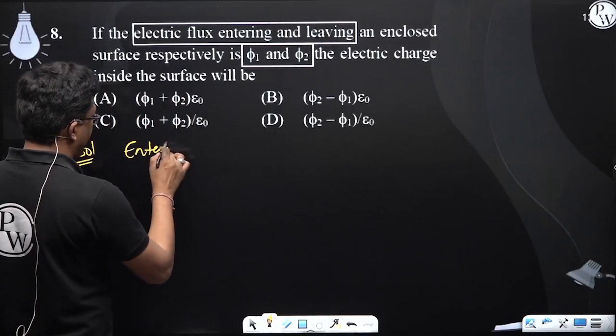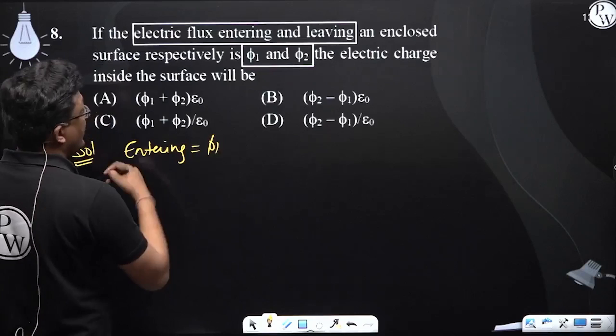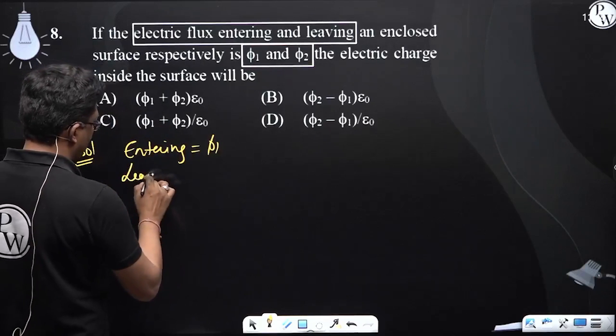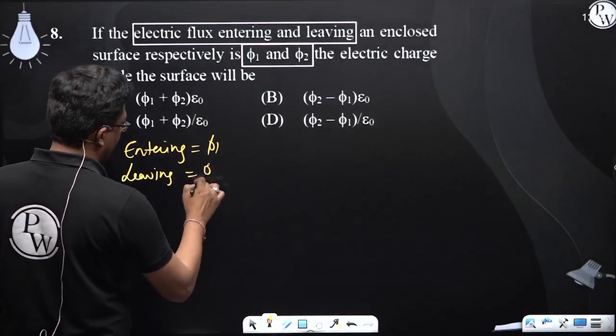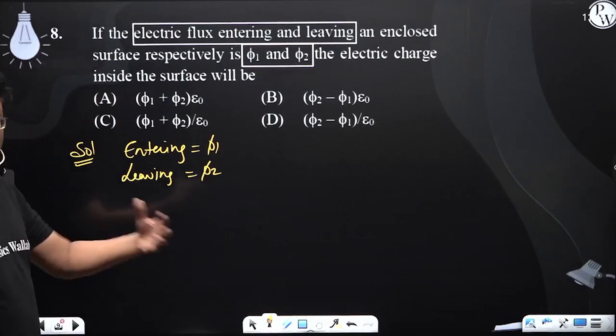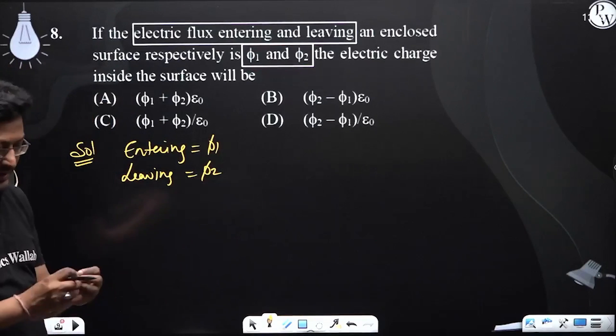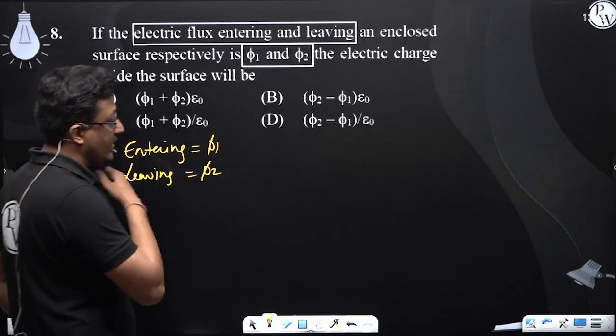Entering flux is 5.1 and leaving is 5.2. Leaving flux is positive.